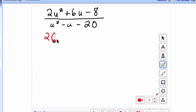So you're left with 2. 2 times what gives me 2u-squared? Just need to multiply it by u-squared, plus 2 times what gives me 6u? That would be 3u.